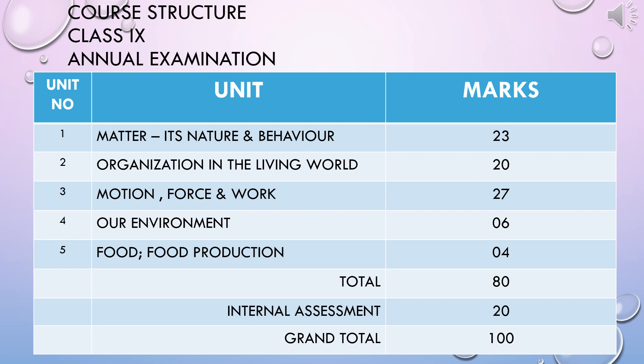This is the course structure for the academic year 2020-21 and it has 5 units. The first one is matter, its nature and behavior, which carries 23 marks and it is purely chemistry. The second one, organization in the living world, carries 20 marks and it is biology. Unit 3, motion, force and work, carries 27 marks and it is purely physics. Units 4 and 5, our environment and food production, carry together 10 marks, making a total of 80 marks. Internal assessment for PT and assignments will be given 20 marks, making a total of 100 marks.